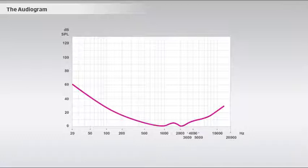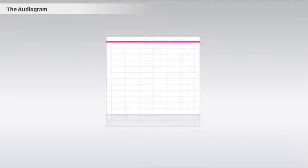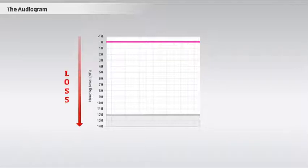Therefore, the DBHL scale was designed. A mathematical correction is applied to the SPL graph to obtain a measurement in DBHL. This DBHL graph allows for an easier interpretation of the hearing thresholds. So the further away from zero you move down the scale, the more severe the hearing loss would be.